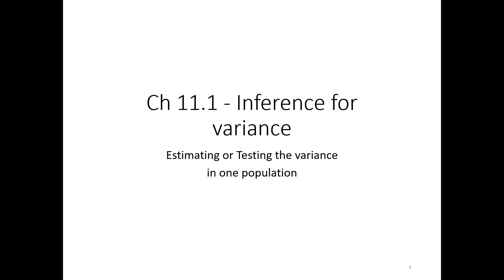Welcome to chapter 11 of the Anderson textbook. The topic is inference for variance. Inference, as we know from previous experience, means estimating a confidence interval or testing a hypothesis. We're delving into a new population parameter — before we talked about the population mean. Now we're going to talk about the population variance and, by extension, the population standard deviation.